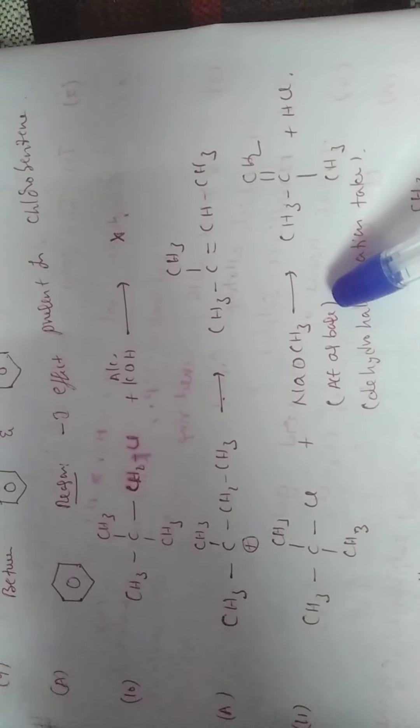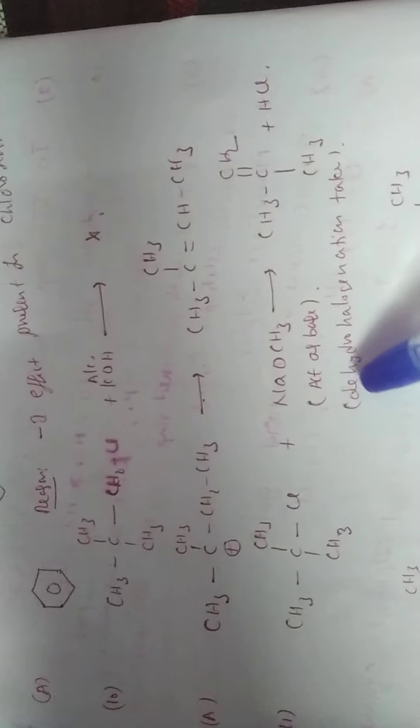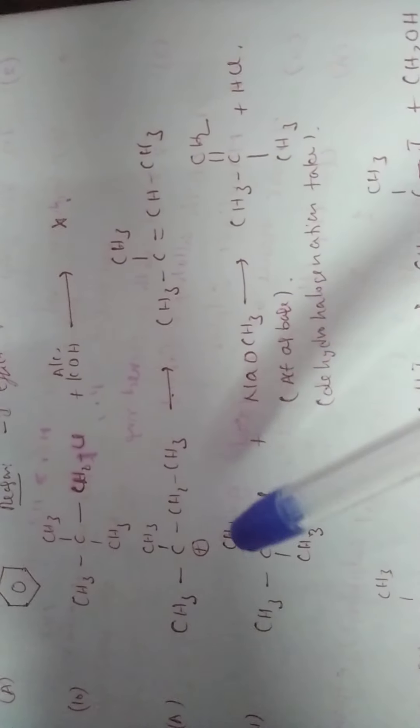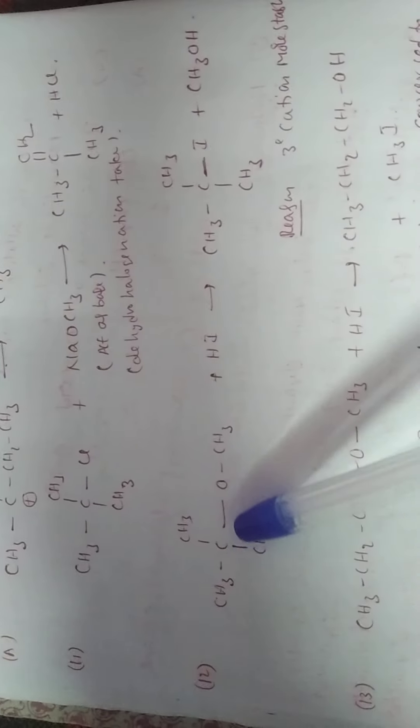Why? Here NaOCH3 acts as a base just like NaOH. When alkyl halides react with base, which reaction? Dehydrohalogenation takes place. So HCl dehydrohalogenation takes place.